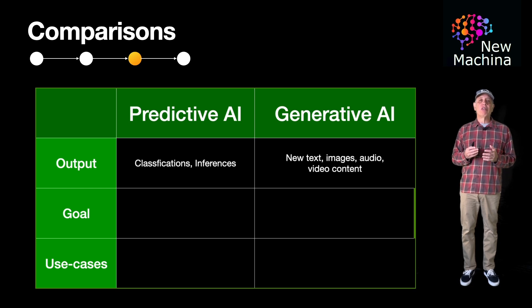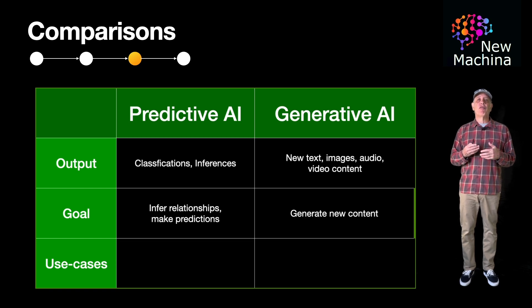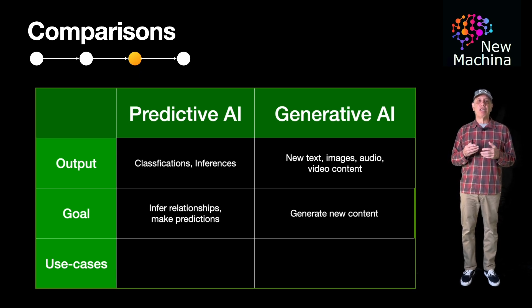What are the differences in their goals? Well, predictive AI aims to infer relationships and make accurate predictions about future data points. Alternatively, Gen AI aims to capture and reproduce the underlying distribution of the training data to generate realistic new content.